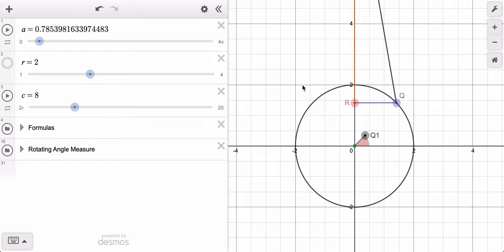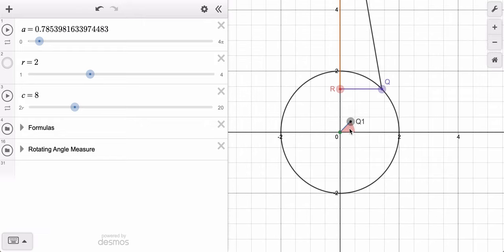We're interested in the sector that you shade in that represents the angle A. So as A increases, so does the size of our shaded sector. And then when we pass 2π, we get a double shading all the way up to 4π.